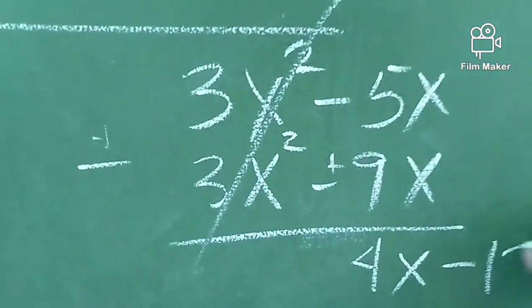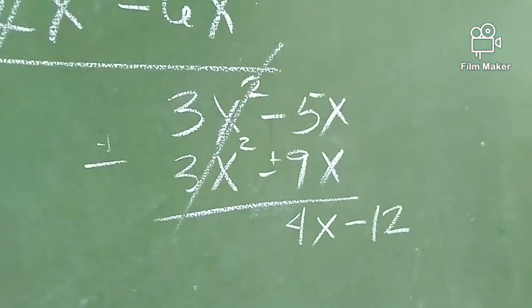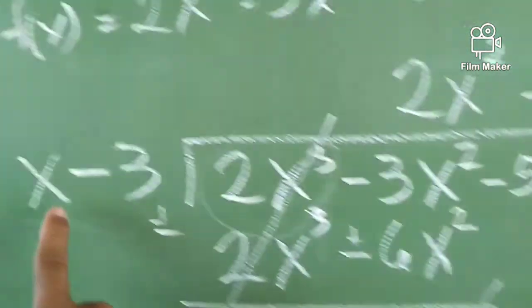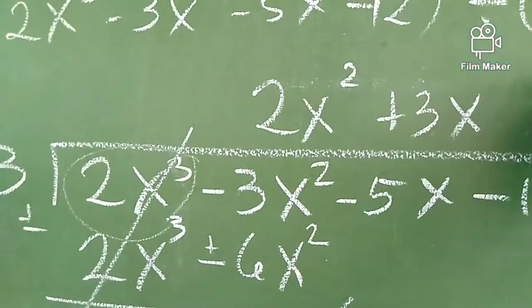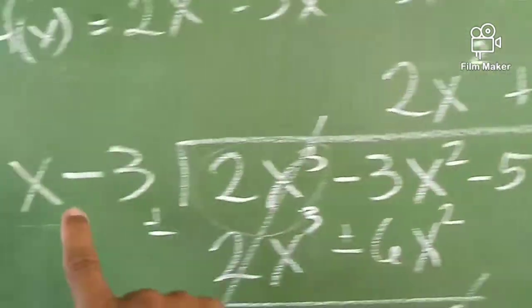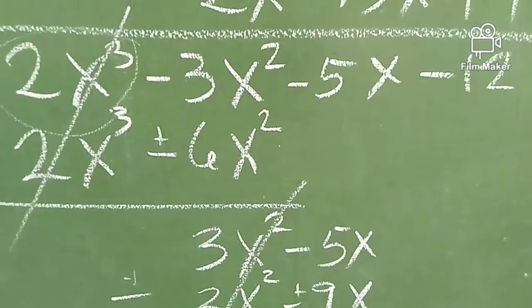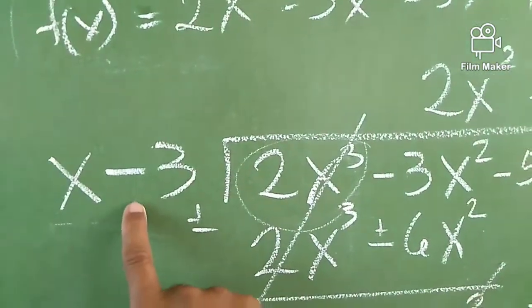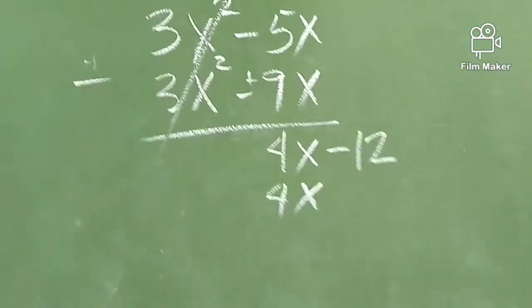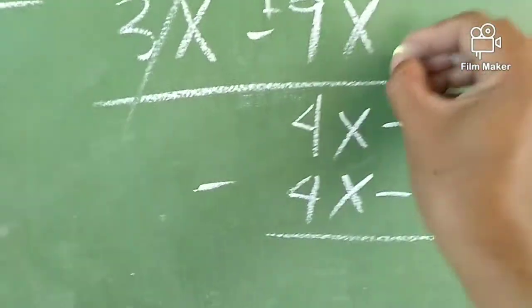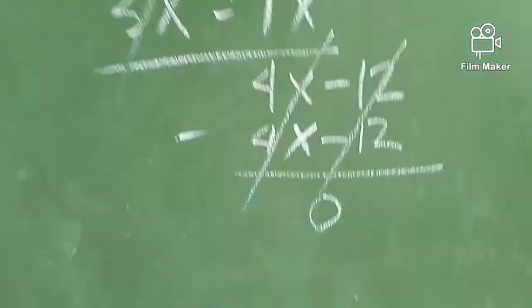Bring down negative 12. So again, ito po yung bigyan natin ng pansin. 4x divided by x — we have positive 4. 4 times x, we have 4x. Then 4 times negative 3, we have negative 12. Subtract po natin sila — cancelled out. Cancelled out. So wala po tayong remainder.